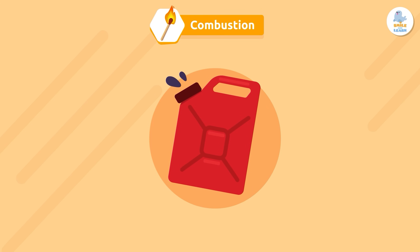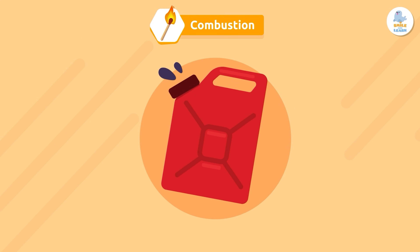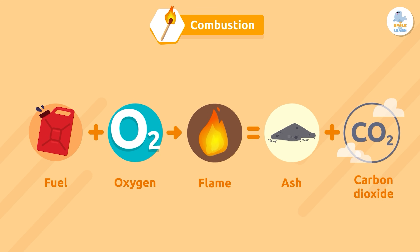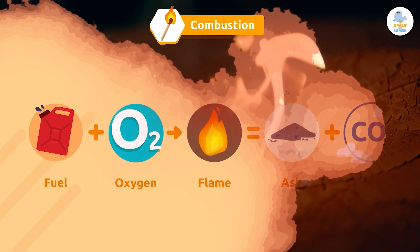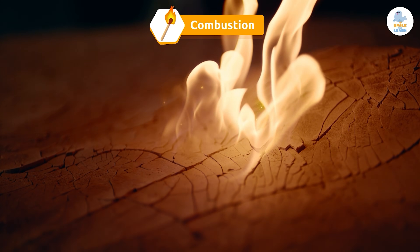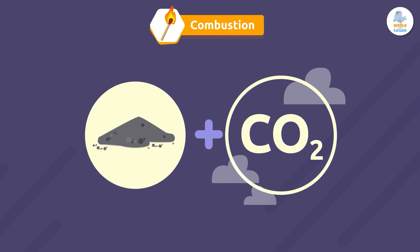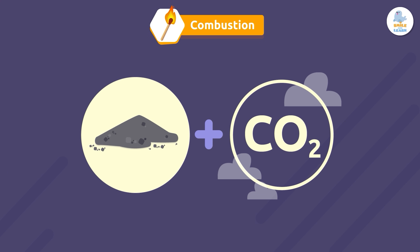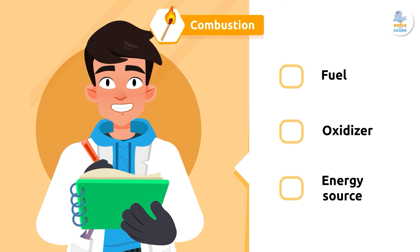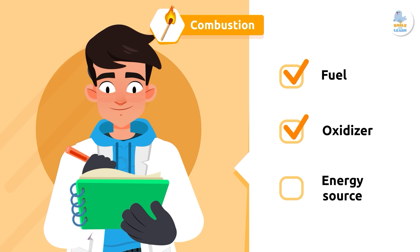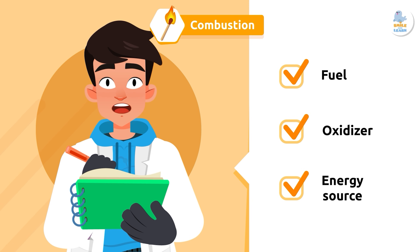Combustion is a chemical reaction that occurs when a combustible material like gasoline burns as it combines with an oxidizer like oxygen in the air, and an energy source like a spark or flame. This reaction generates a flame which releases a lot of heat and light, and produces new substances like carbon dioxide and, in some cases, ashes. In summary, we need three elements for combustion to occur: a fuel, an oxidizer, and in most cases, an energy source.